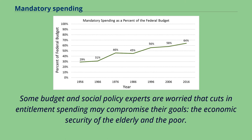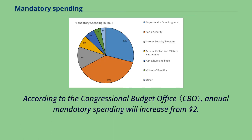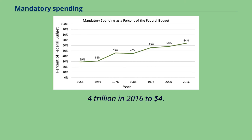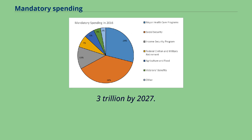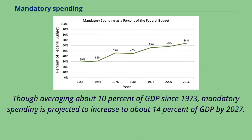Some budget and social policy experts are worried that cuts in entitlement spending may compromise their goals — the economic security of the elderly and the poor. According to the Congressional Budget Office, annual mandatory spending will increase from $2.4 trillion in 2016 to $4.3 trillion by 2027. Though averaging about 10% of GDP since 1973, mandatory spending is projected to increase to about 14% of GDP by 2027.